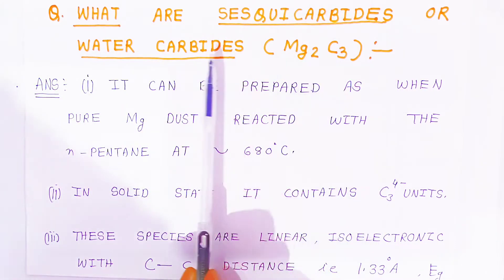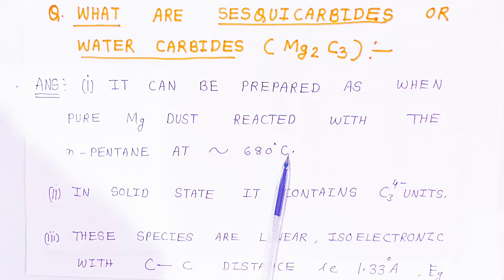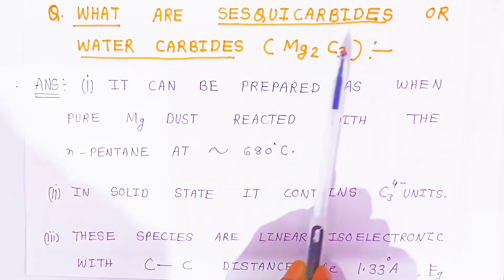Now students, how we are going to write about sesqui carbides or water carbides. It can be prepared when pure magnesium dust reacts with n-pentane at nearly 680 degrees celsius, forming sesqui carbides.